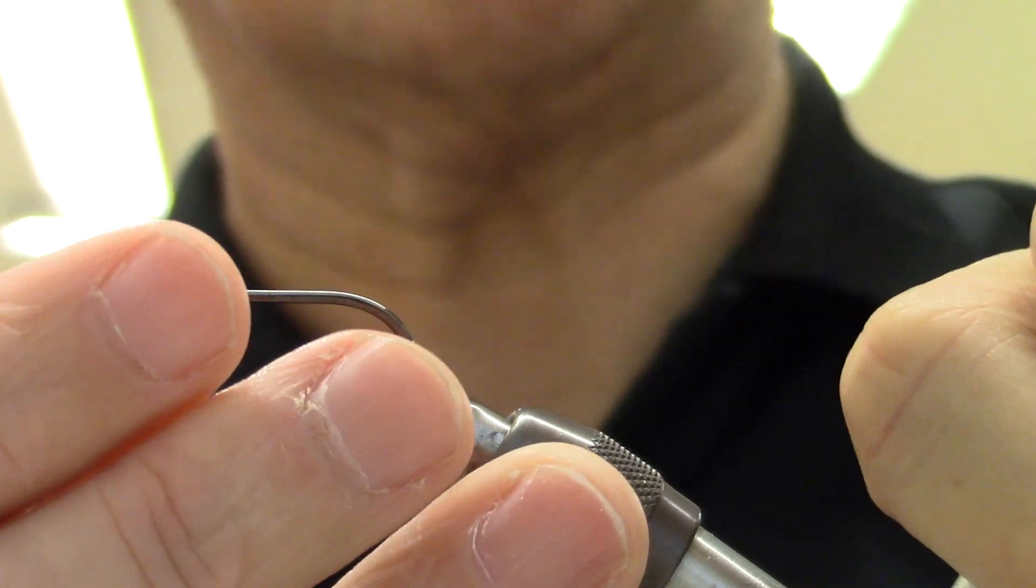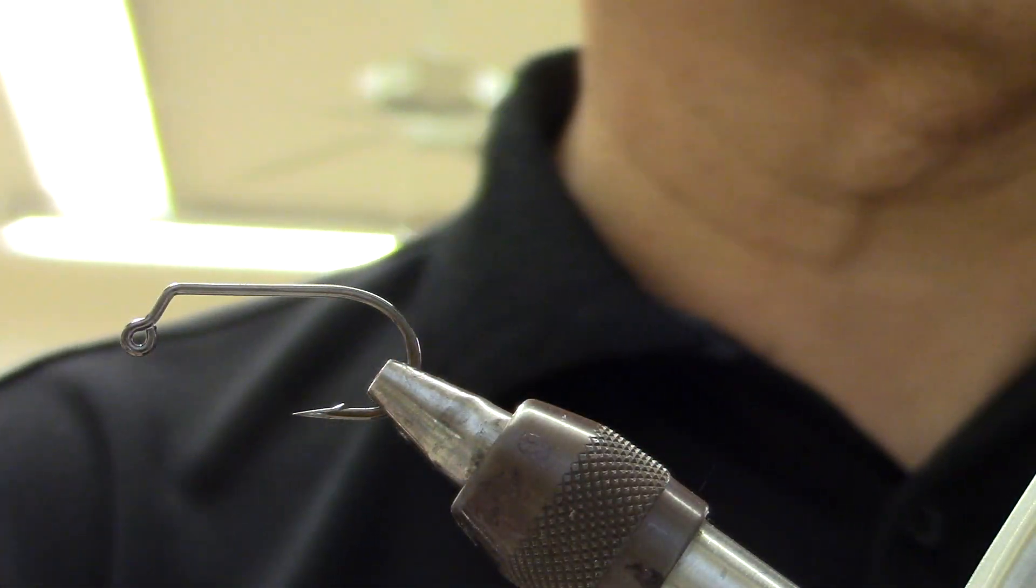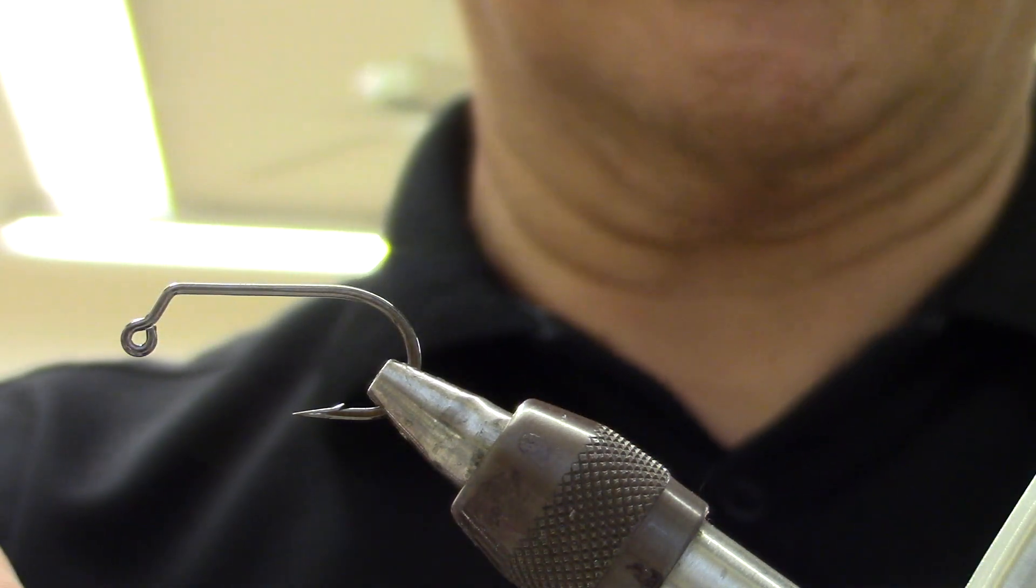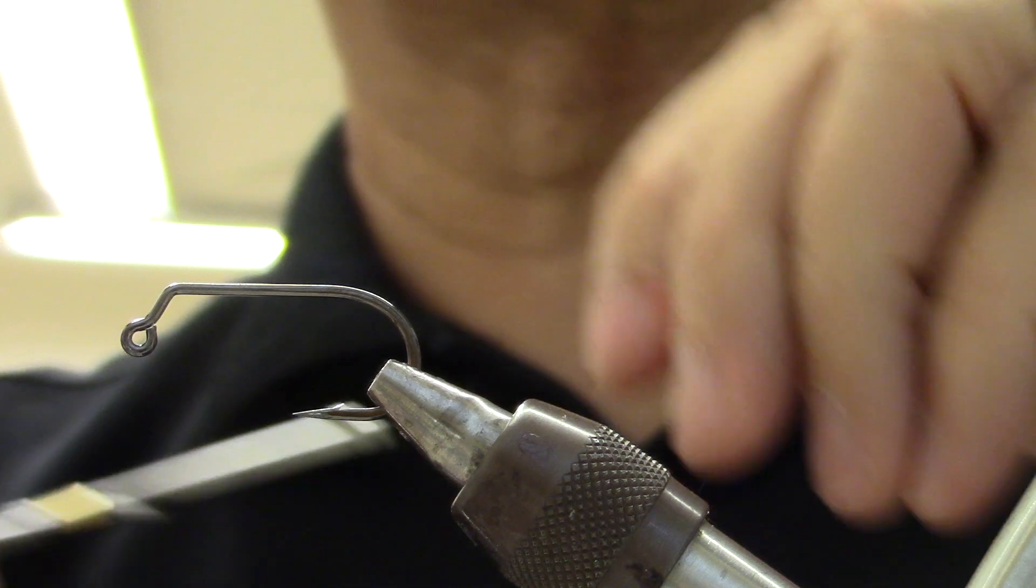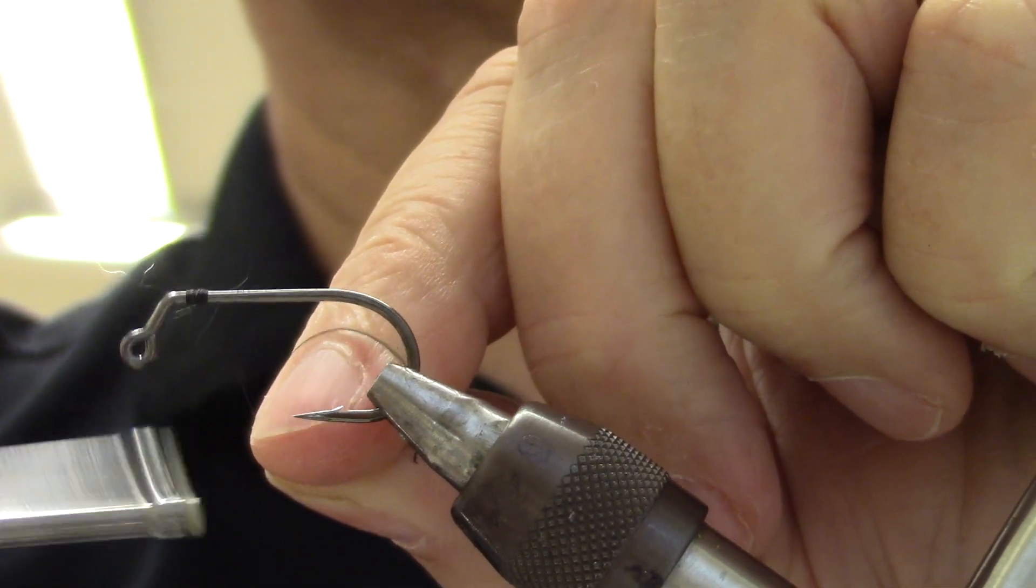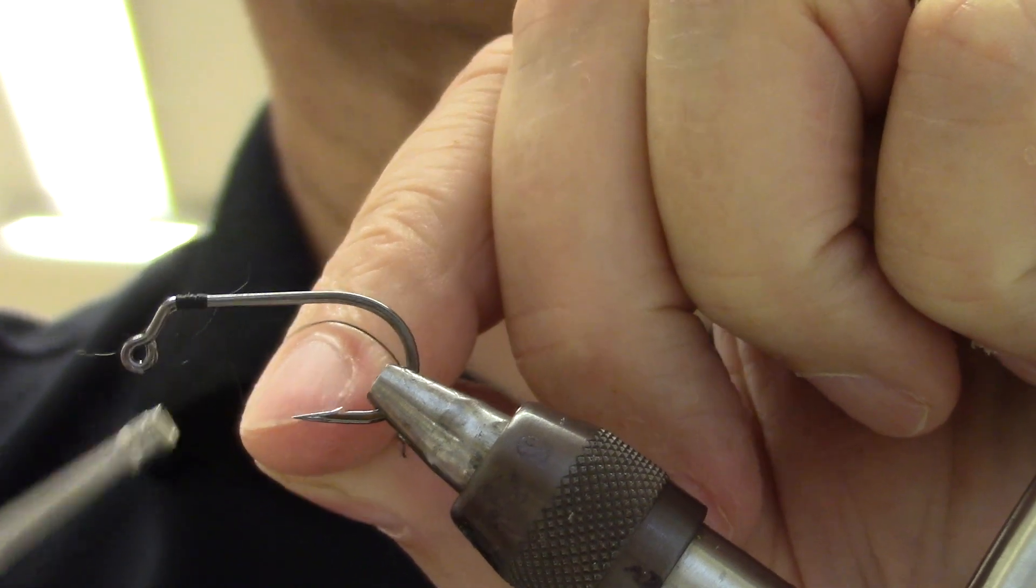We don't have a name for this because this is the second one I've tied. But we'll figure out. But I'm thinking this thing's going to hunt like no tomorrow. So we'll do a thread base here right at the bend. And that's where I'm going to attach my eye at.